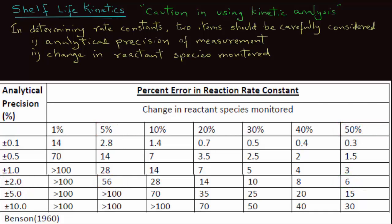So, this table is very useful in determining what is the percent error in calculating reaction rate constant based both on the analytical precision of measuring a quality attribute and how much of the change in the reactant species was monitored.